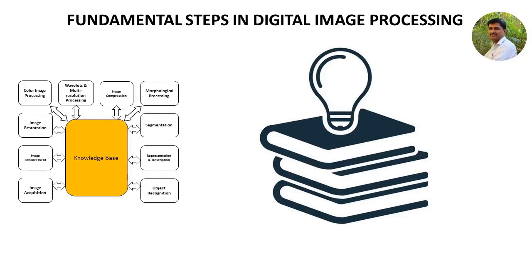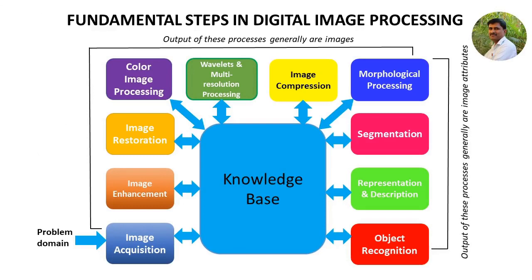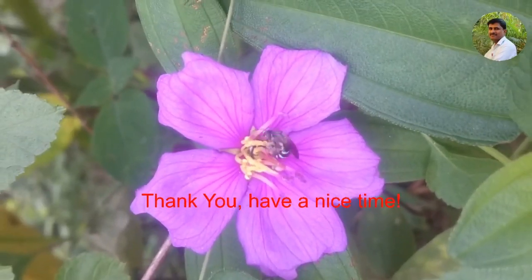The knowledge base guides the operation of each processing module and controls the interaction between the modules. In this subject, we are going to discuss these fundamental steps in detail across different modules: image acquisition in Module 1, image enhancement in Module 2, image restoration and color image processing in Module 3, wavelets, multi-resolution processing, and morphological processing in Module 4, and segmentation, representation, and description in Module 5. In this video, we have discussed the 10 different fundamental steps involved in digital image processing. Thank you and have a nice time.